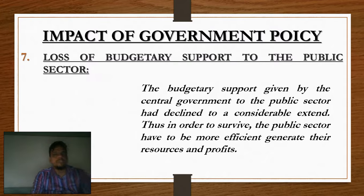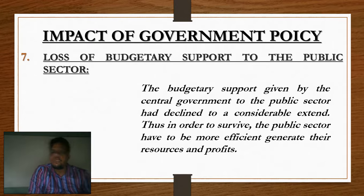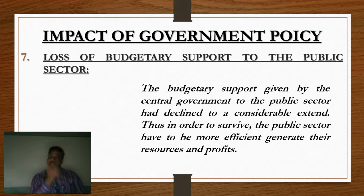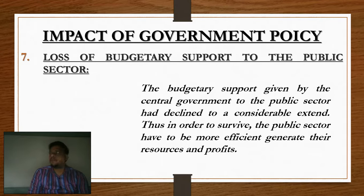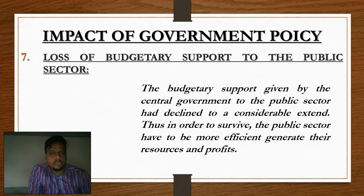The seventh point is loss of budgetary support to the public sector. In 1991, there was no support for the private sector, but government policies changed — public sector support was reduced through privatization. Budgetary support from the central government to the public sector declined considerably. Thus, in order to survive, the public sector has to be more effective, generate its own resources, and be profitable so that customer needs are fulfilled in the market.